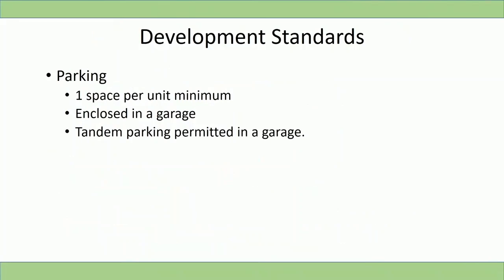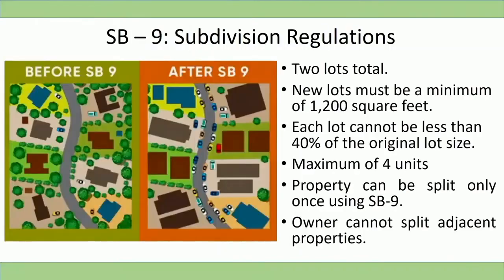Parking is required to be in an enclosed garage with a minimum of one parking space per unit. Two-unit residential developments are permitted to have tandem parking to meet the minimum parking requirement. Subdivision of SB9-eligible properties is by a ministerial tentative parcel map that does not require a public hearing. A total of two lots may be created, with a minimum lot size of 1,200 square feet, and the lot split ratio must be a minimum of a 40/60 split.